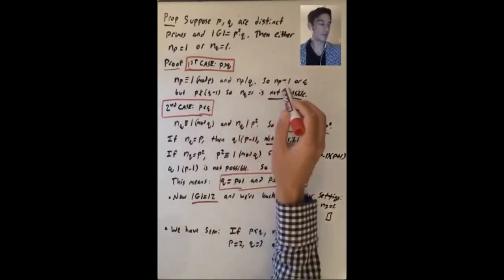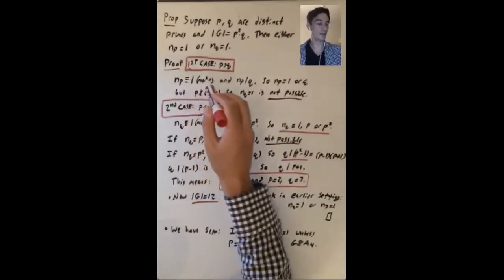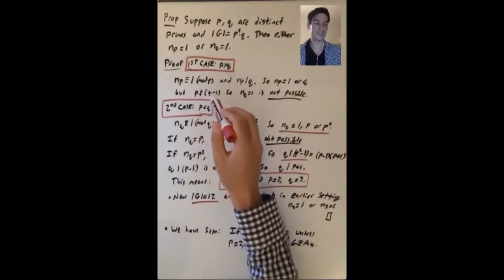So q is prime, so np is 1 or it's q. But if it's q, then q is congruent to 1 mod p, and that means p divides q minus 1.